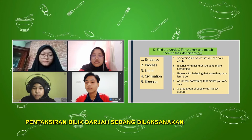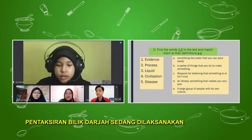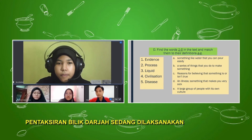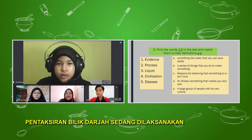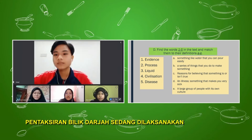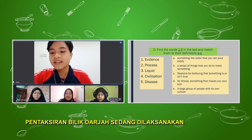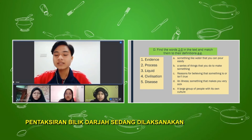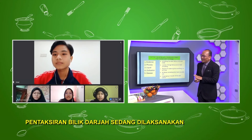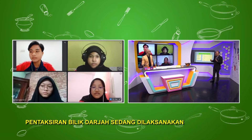Let's go to the fourth one — civilization. Why don't we have Nabiha? Number four — civilization — E: a large group of people with its own culture. Civilization: a large group of people with its own culture. And the last one, disease — Haikal? The answer is D: an illness, something that makes you very sick. Disease: an illness, something that makes you very sick. Well done, good job everybody!